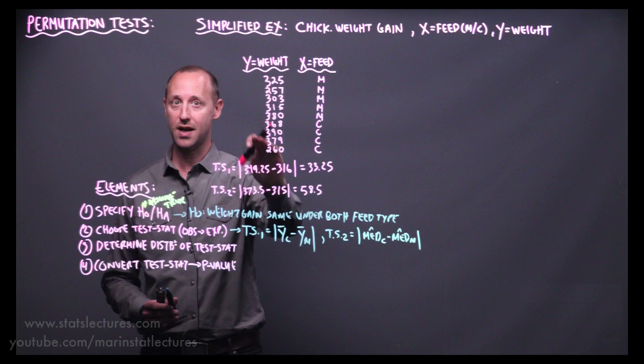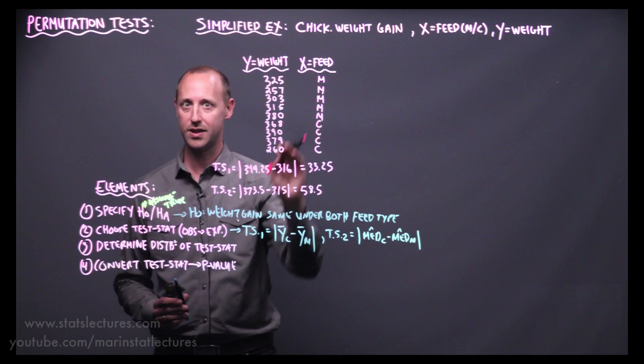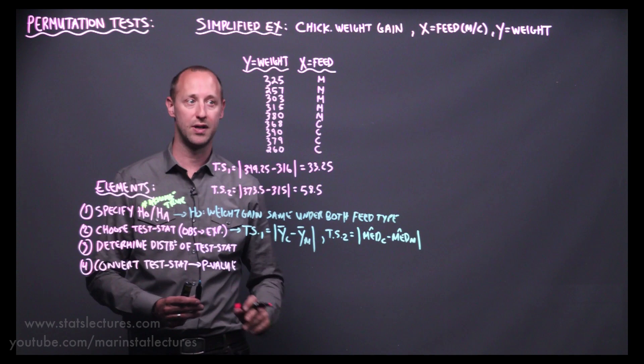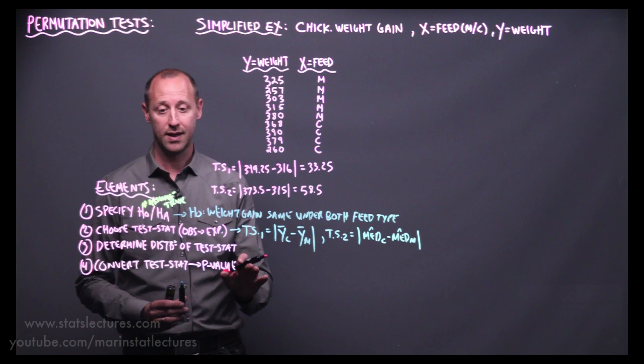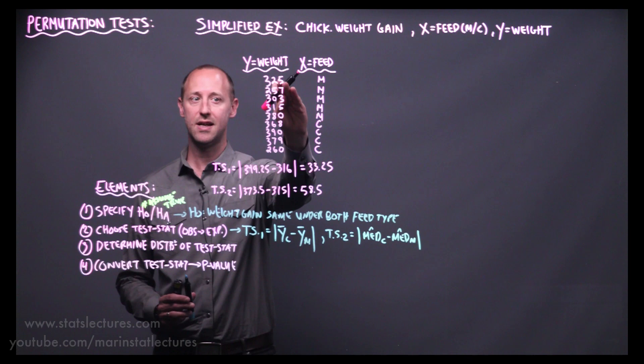We start by assuming our null hypothesis is true. Essentially, we're assuming these nine observations are equally likely to belong to the meat meal or casein group — that weight is independent of feed type, or that these labels are, in some sense, irrelevant. This observation of 260 is just as likely to belong to casein as to meat meal; the weights and feed types are independent.